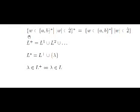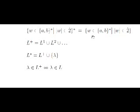If we apply the Kleene star to the language of words with even length, we will obtain the same language again. That's because the concatenation of any pair of words of even length will always have even length again.